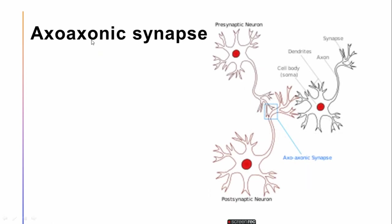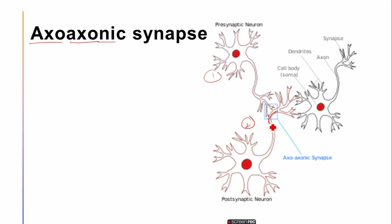Moving forward to the axo-axonic synapse: here we have one neuron whose axon connects with another neuron that is also sharing its axon. You can see this is one neuron and this is a second neuron — this is the axon terminal of one and this is also the axon of another neuron. That synapse is known as the axo-axonic synapse.